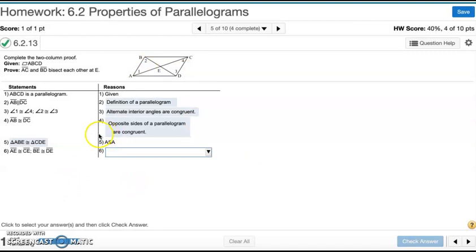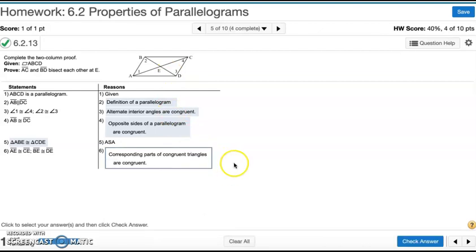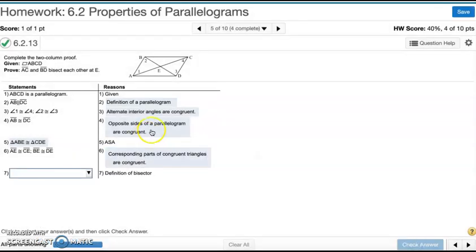And now it says AE is congruent to CE and BE is congruent to DE. And that is true because corresponding parts of congruent triangles are congruent. We proved that those two triangles are equal and those sides correspond with each other, so the measures have to be equal to each other.